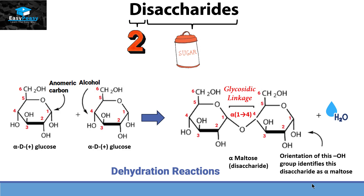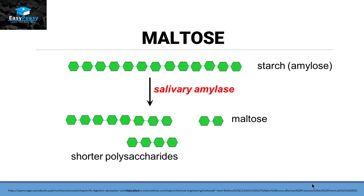Maltose is a naturally occurring disaccharide which comes from the polysaccharide starch — specifically the amylose fraction of starch. The enzyme called salivary amylase degrades starch amylose into maltose and short polysaccharide chains.